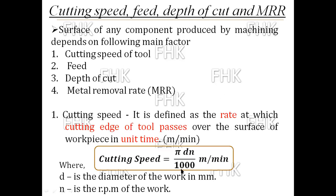In the formula V = π·d·n / 1000 meters per minute, d is the diameter of the workpiece in mm. When you take the diameter in mm and divide by 1000, it converts to meters. So you take the diameter in mm and you will get the answer of cutting speed in meters per minute.